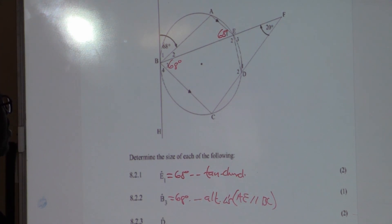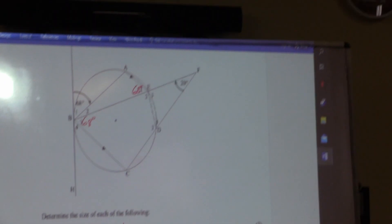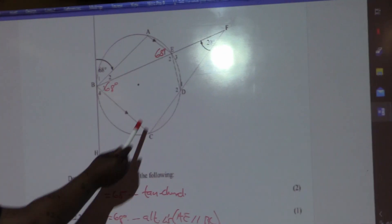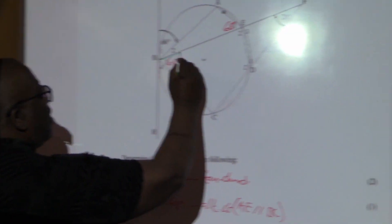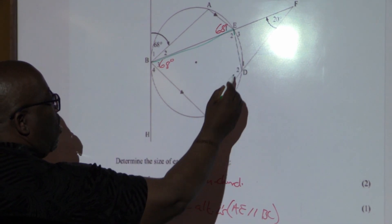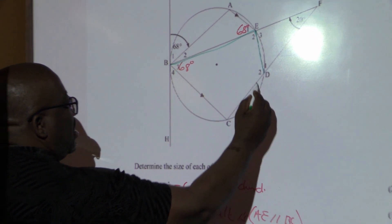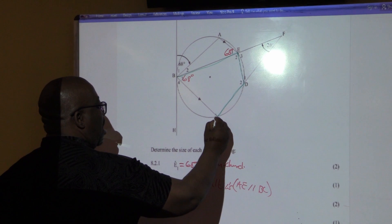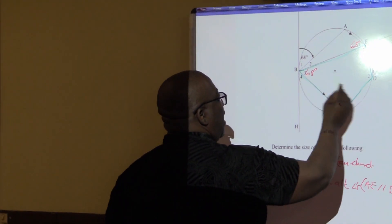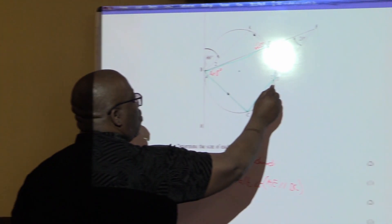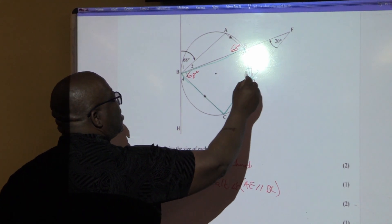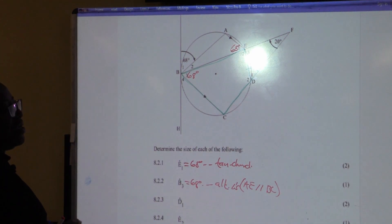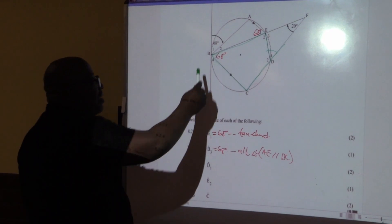8.2.3. Find D1. Where is D1? This is where D1 is. I hope you are able to see what this is. This is a cyclic quad. I want you to see this cyclic quad. And in relation to this cyclic quad, what is D1? D1 is the exterior angle of a cyclic quad. I want you to look at this cyclic quad. This is the cyclic quad.